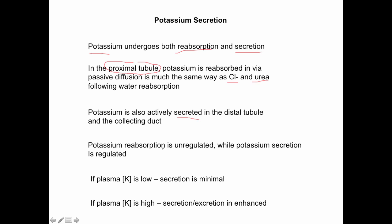Potassium is also actively secreted at the distal tubule and the collecting duct. Potassium reabsorption is passive and unregulated, but potassium secretion is active and regulated. If plasma potassium is low, we secrete very little to minimize loss. If plasma potassium gets high, we enhance secretion to get rid of it.